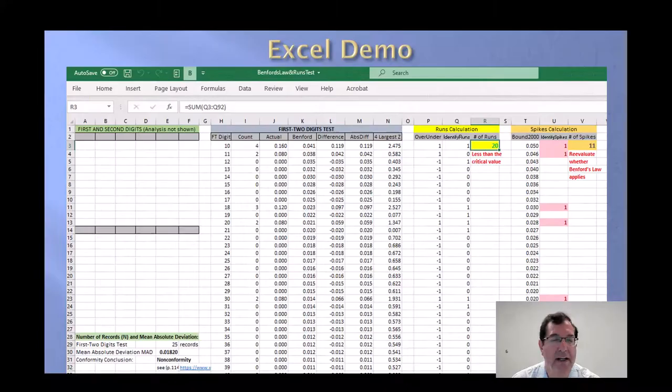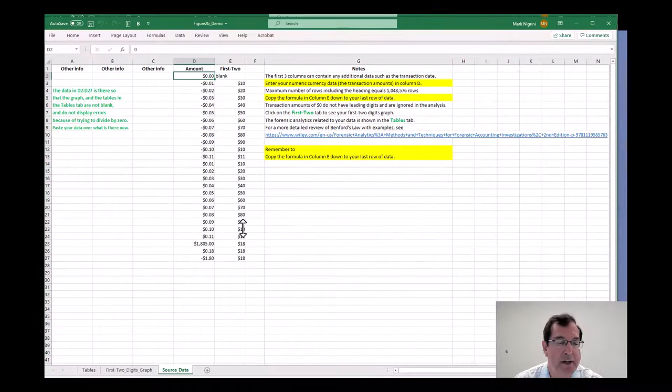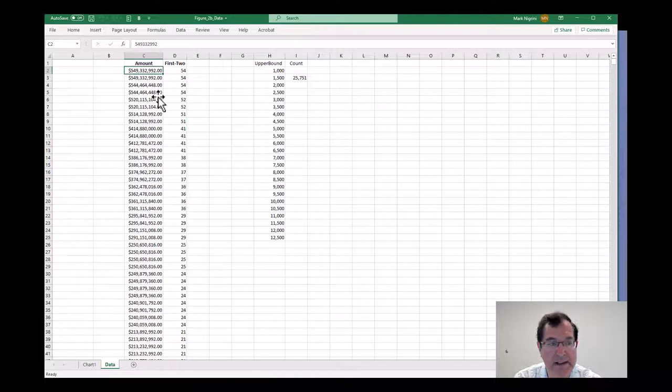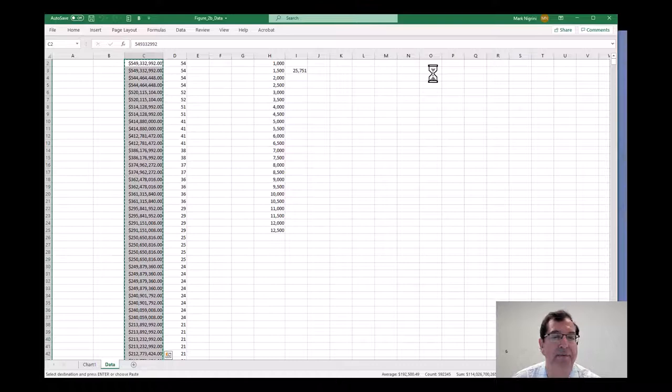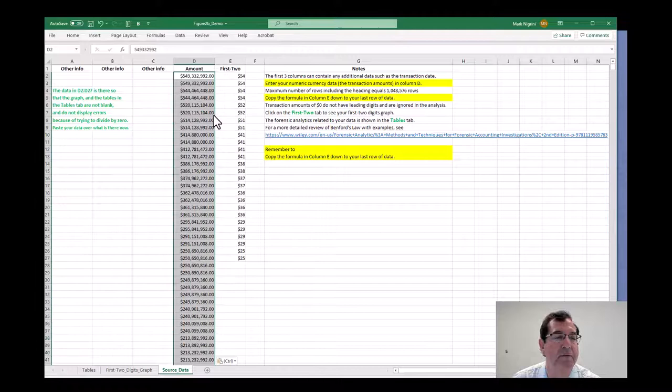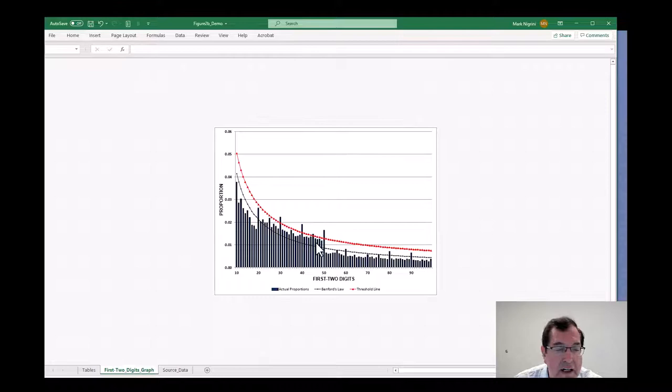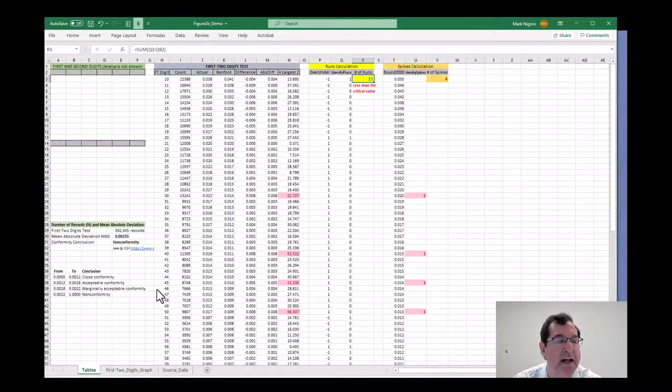Next application, the same spreadsheet. And now I'm going to look at my figure 2b data. This is the data. We will highlight the data. It is in cell C2. And again, it's a matter of copy. Paste. Copy to the bottom. There we go.